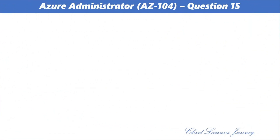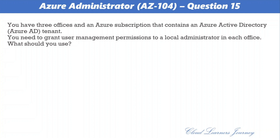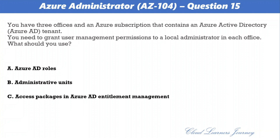Question number fifteen. You have three offices and an Azure subscription with an Azure Active Directory tenant. You need to grant user management permissions to a local administrator in each office. The correct option is Administrative Units. Administrative units restrict permissions in a role to a defined portion of your organization — for example, delegating the Help Desk Administrator role to regional support specialists so they can manage users only in the region they support.